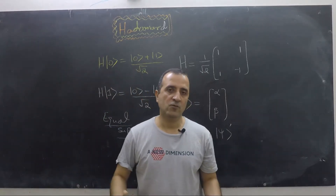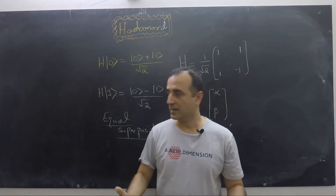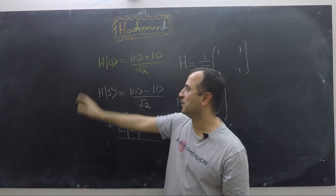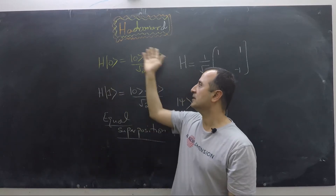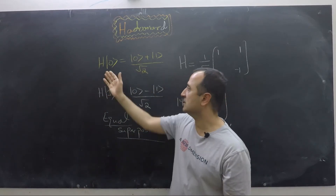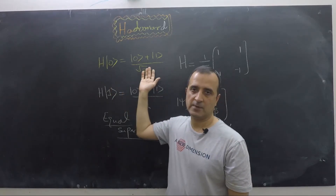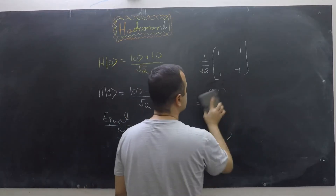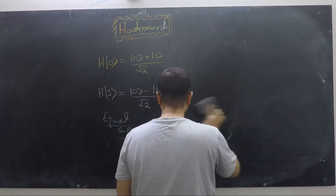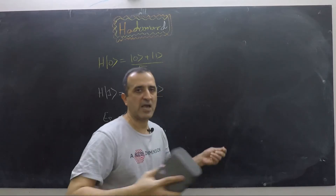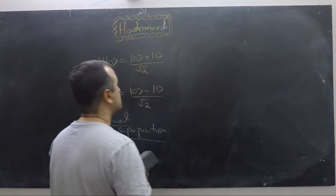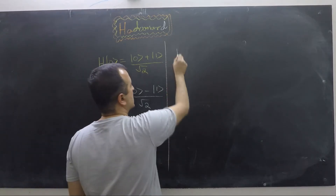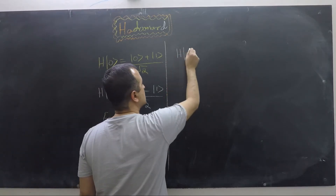My goal in this video is to explain everything clearly. So instead of just saying that when the Hadamard gate is applied on |0⟩ we get this result, I want to show that this result is indeed correct. This is easy and simple to understand, but I want to show it so that everyone is on the same page.